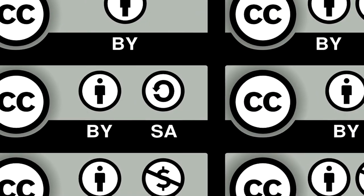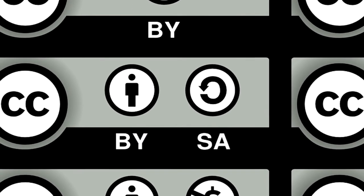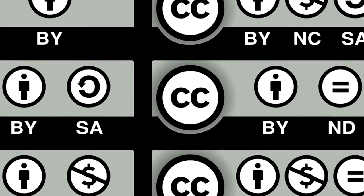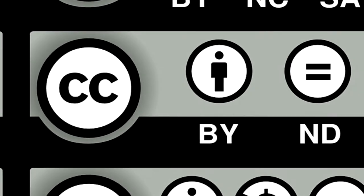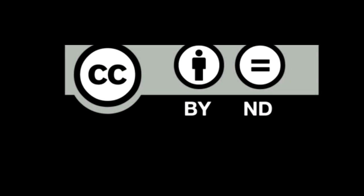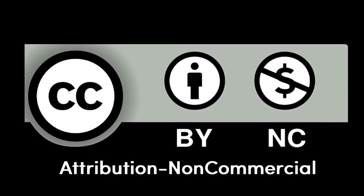CC by SA means by attribution and share alike. In other words, you must credit the creator and share the resource as it was shared with you. Some licenses include ND, which means no derivatives. Others include NC, which means that the resource was not intended for commercial purposes or monetary compensation.